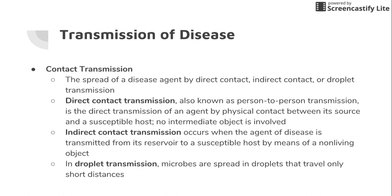Indirect contact is when a disease is transmitted from its reservoir to the host via a non-living object. For example, if I was sick with the flu and touched a light switch, and then you touched the same light switch, you could get the flu from that. Objects like tissues, handkerchiefs, towels, bedding, diapers, drinking cups, utensils, toys, and money can all be sources of indirect contact transmission.